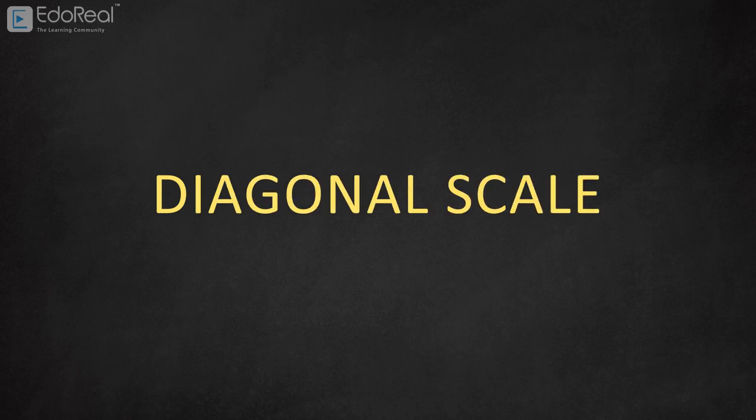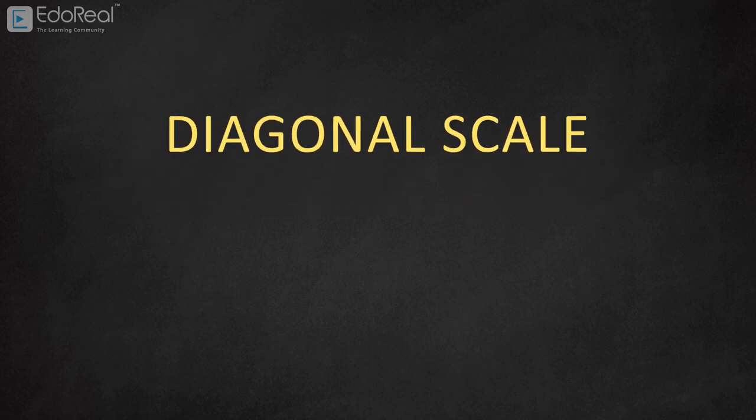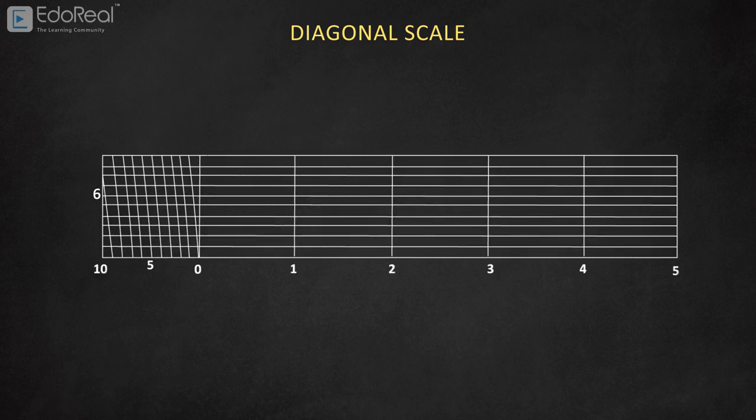Diagonal scale. Let's learn about the diagonal scale in this video. Diagonal scale is a type of scale which is used to measure three different dimensions at the same time. That is the main unit and its immediate two subdivisions.